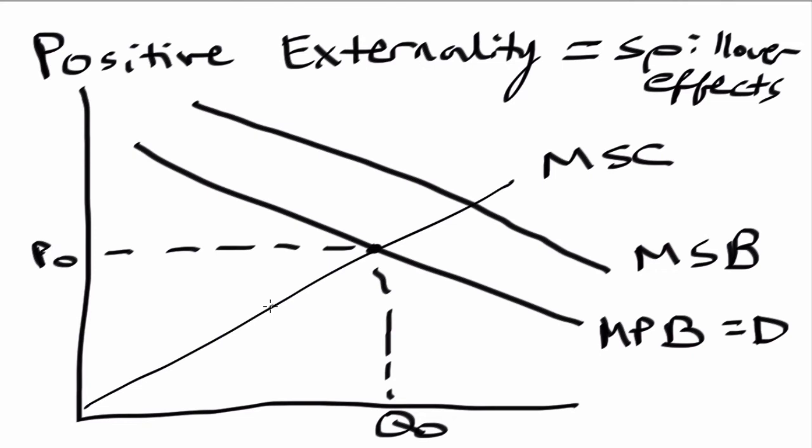And then what we also can see is we can actually mark where P1 and Q1 are. So let's go ahead and do that. And so as you can see from a positive externality, we have an overall upward shift in price as well as a rightward shift in quantity. So we've moved outwards with respect to our overall equilibrium.